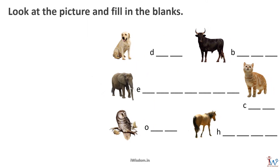Look at the picture and fill in the blanks. These are pictures of animals. First one is a dog, then we have a bull, beautiful, then comes the elephant, then we have a cat, an owl, and a horse. Wonderful!